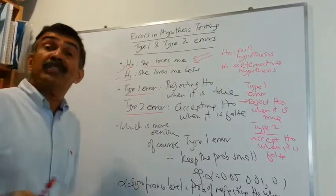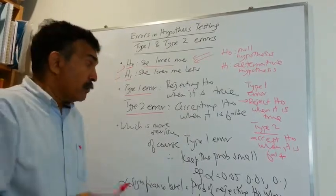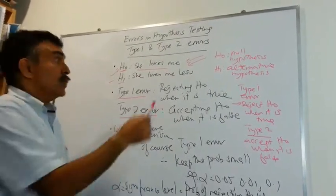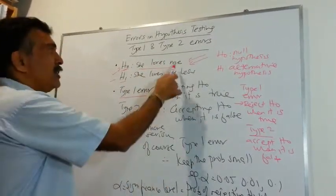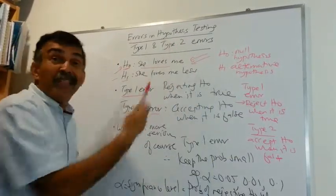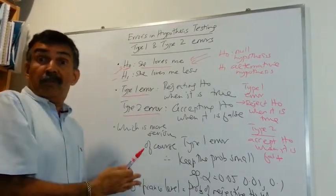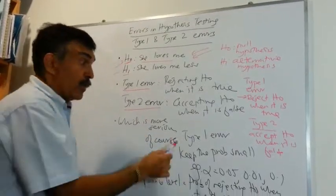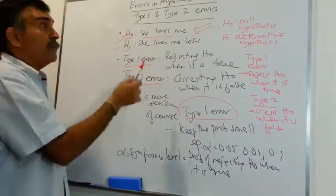Now, which is more serious? Type 1 error is more serious. Why? Because we are rejecting H0 when it's true. You know for a fact, 10 years she'll be with you. Now, if you're going to reject this and it happens to be true, you're in deep trouble. So you are saying that this Type 1 error is more serious.